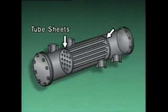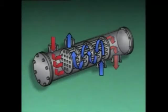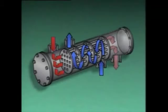As the hotter fluid passes through the tubes, it transfers heat to the tubes and the fluid on the shell side, so the temperature of the fluid flowing through the tubes decreases. On the shell side, the cooler fluid passes around the tubes and receives heat from the tubes, so its temperature increases.